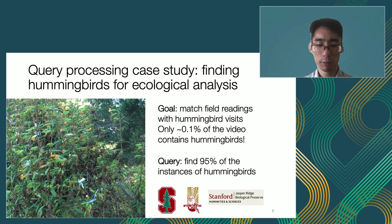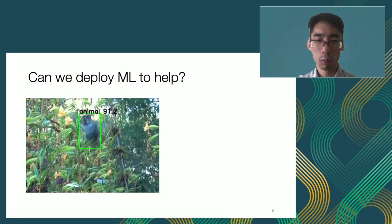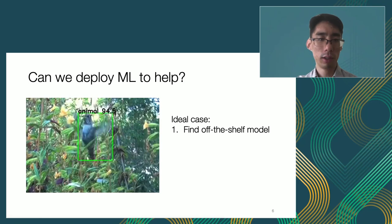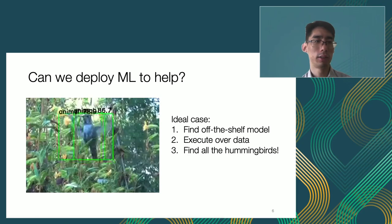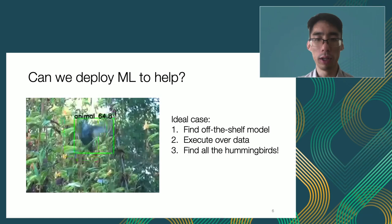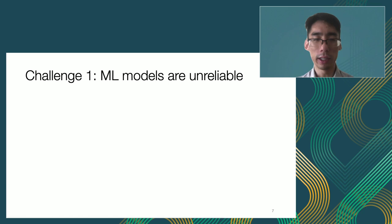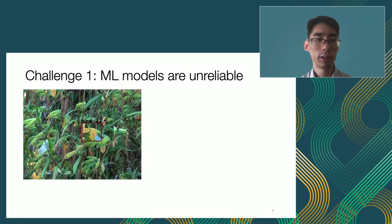So can we deploy machine learning to help? In the best case, we would take an off-the-shelf model, deploy it over all the data, and find all the hummingbirds. Unfortunately, there are two problems with deploying machine learning at scale. The first is that machine learning models are unreliable. From the same video, I'm showing an example where the machine learning model does poorly — it's detecting a flower as a bird, and similarly it can confuse a human hand as a bird.